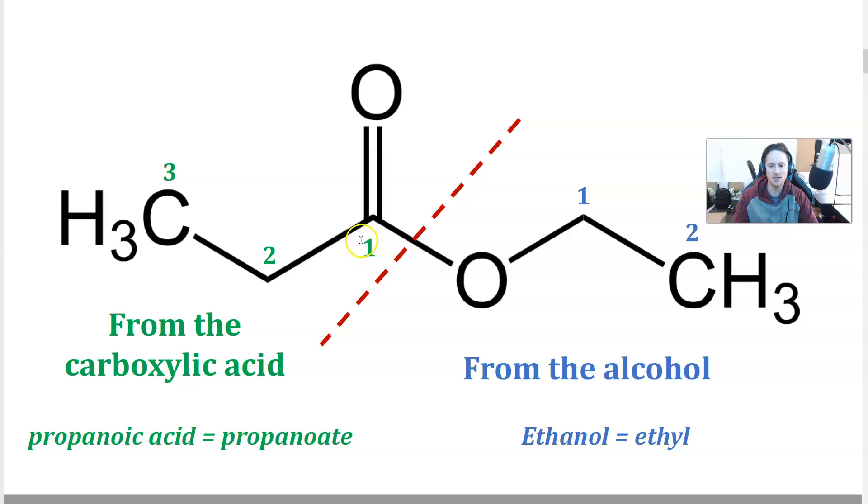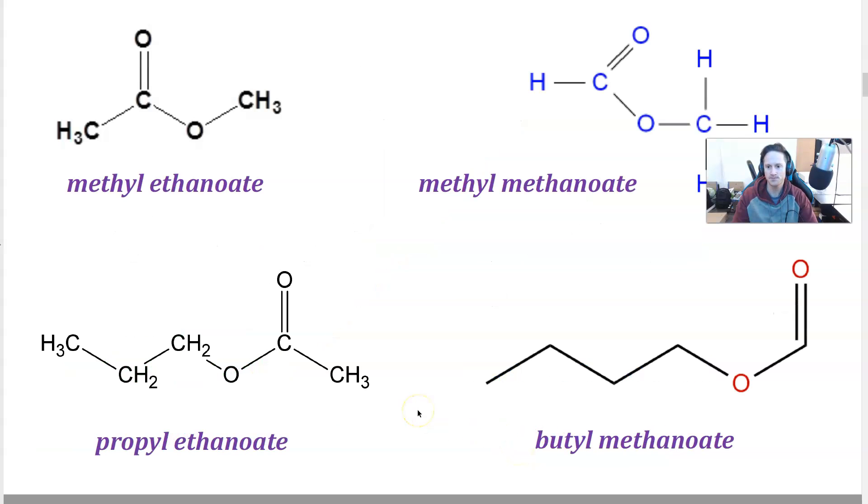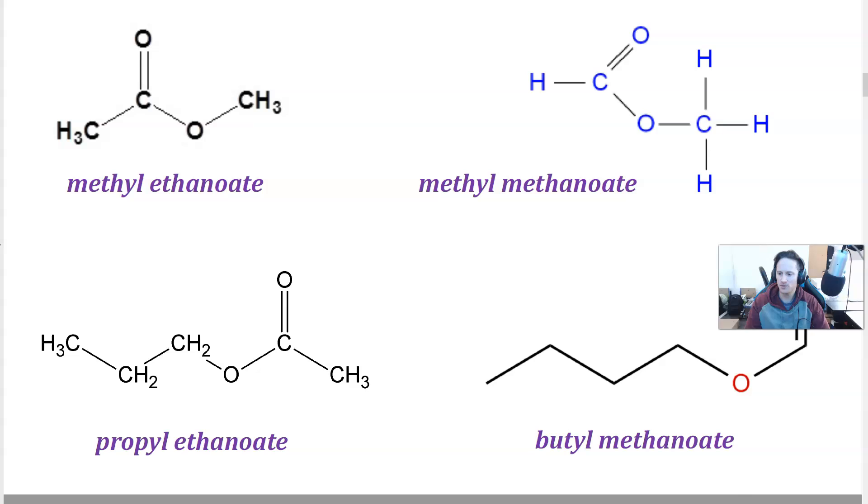So I've numbered the carbons here, carbon number one, carbon number two, carbon number three. So that would be prop, so it's going to be propanoic acid. And then this alcohol, one, two carbons. So that's going to be eth.